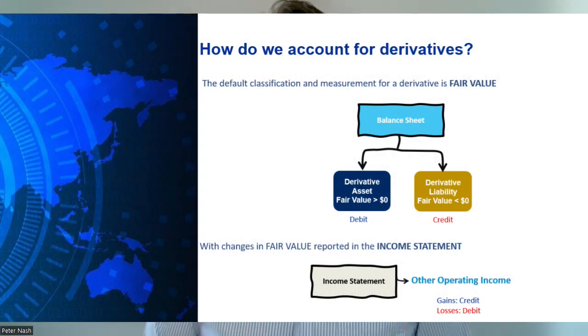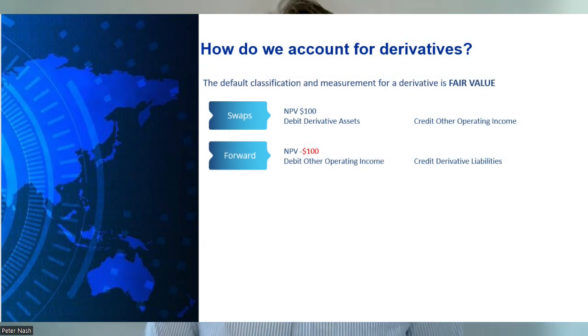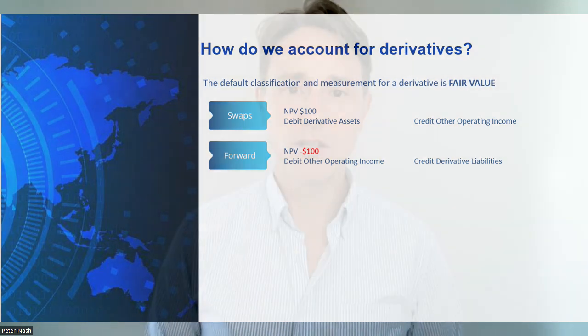When your fair value changes — say it goes from zero up to $100, or from $100 up to $200 — you report those changes through the income statement in a non-interest revenue line. If you have a gain, meaning fair value has gone up, you credit the income statement and debit the balance sheet. If fair value has gone down, you credit the balance sheet and debit the income statement. For example, if our swap has a fair value of $100 in our favor, we debit derivative assets and credit other operating income. If our forward has a negative fair value of $100, we debit the income statement and credit derivative liabilities.